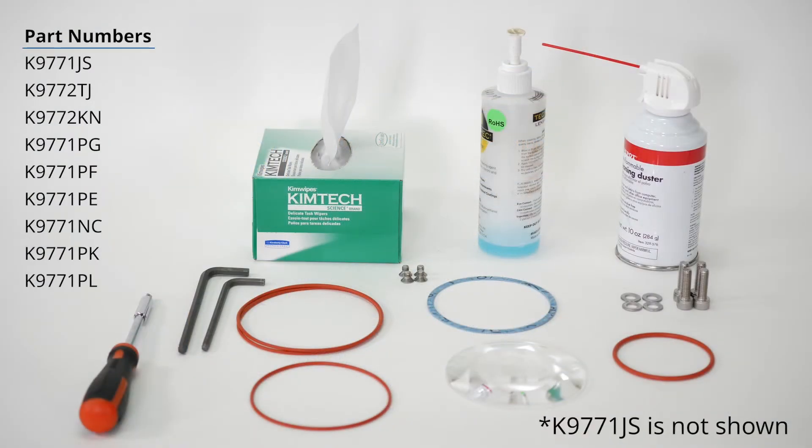Parts you may need for performing this replacement include K9771JS, screws for attaching the SCU or LU to alignment flange or LAO; K9772TJ, the outer ring for alignment flange or O-ring for LAO; K9772KN, the LAO lens itself; K9771PG, the LAO lens gasket; K9771PF, the LAO lens O-ring, you'll need two of these; K9771PF, the LAO lens mounting body O-ring; K9771PH, M6 L8mm flathead screws, you need four of those.